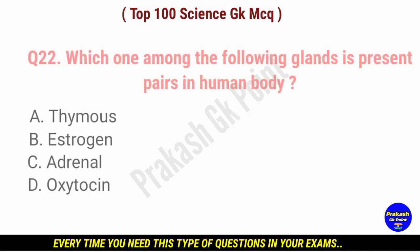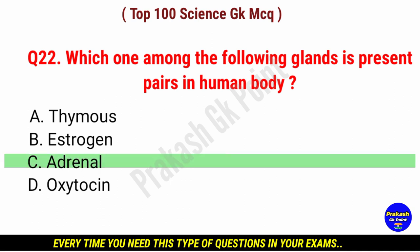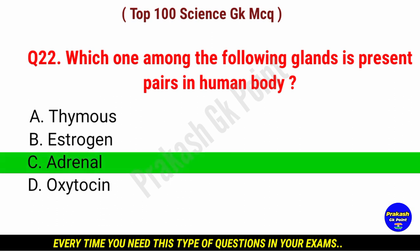Which one among the following gland is present in the human body? Answer: option C, adrenal.